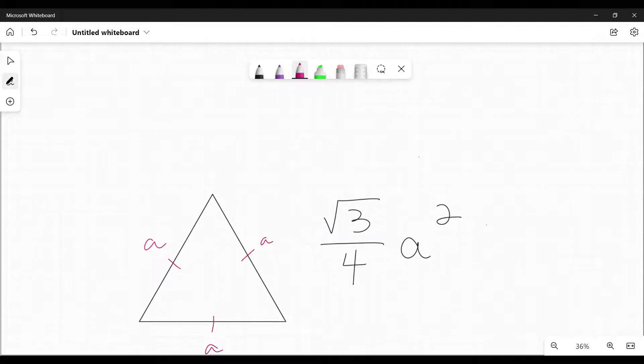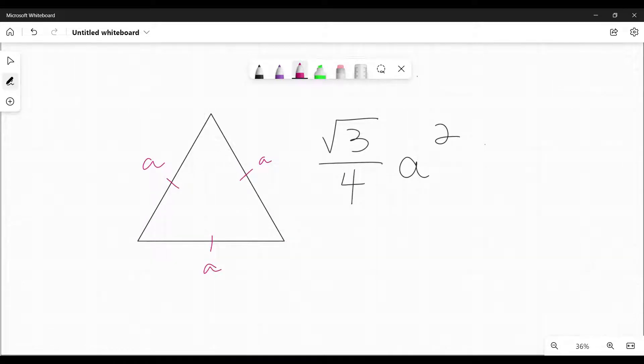So first, here is the formula for the area of an equilateral triangle where each side is the same. It makes it equilateral and we're calling each side A. The formula is the square root of three over four times A squared.